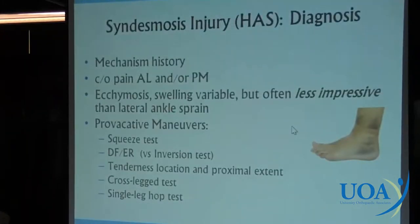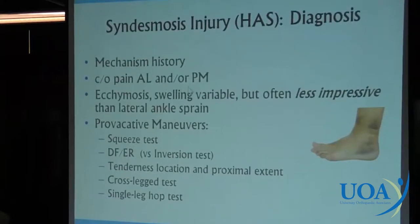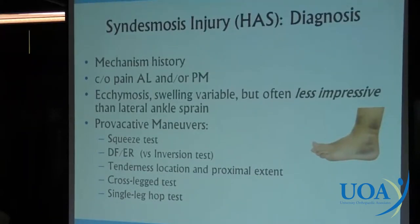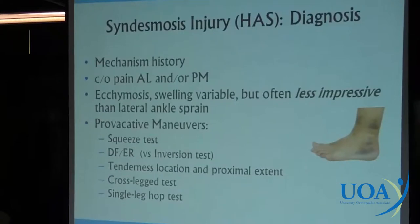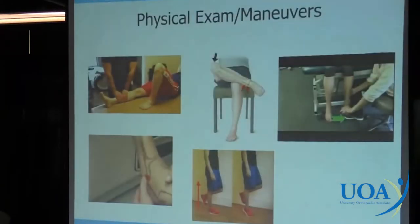The mechanism is very important — follow your history and it will give you most of the answers. The patient will complain of anterolateral pain, oftentimes proximal to the ankle, and sometimes posterior medial pain as well. Ecchymosis and swelling can be less impressive than with typical ankle sprains. There are several provocative maneuvers we use: the squeeze test, the dorsiflexion external rotation test (also called the Klieger test), as opposed to the inversion test for lateral ankle sprain, tenderness location and how proximal it extends, the cross-legged test, and the single leg hop test.